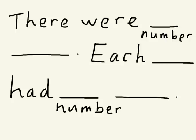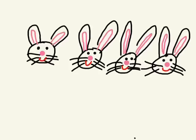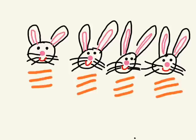Let me show you an example. Here's my story — please don't laugh at my picture too much! Once there lived a family of four bunnies, and for breakfast, each bunny ate three carrots. How many carrots did the bunnies eat all together? That's an example of a multiplication number story.